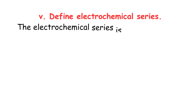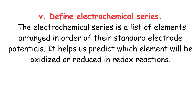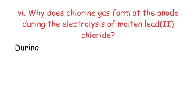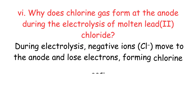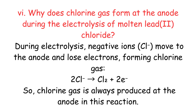Short Question 5: Define electrochemical series. The electrochemical series is a list of elements arranged in order of their standard electrode potentials. It helps us predict which element will be oxidized or reduced in redox reactions. Short Question 6: Why does chlorine gas form at the anode during the electrolysis of molten lead(II) chloride? During electrolysis, negative Cl⁻ ions move to the anode and lose electrons, forming chlorine gas. So chlorine gas is always produced at the anode in this reaction.